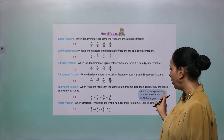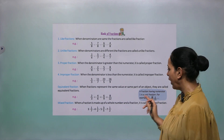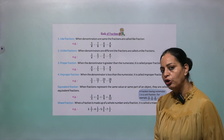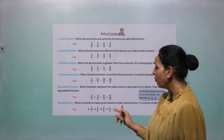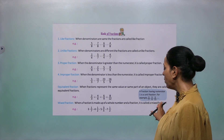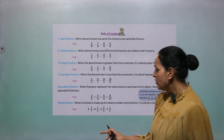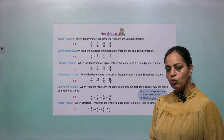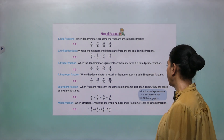A fraction having numerator 1 is called a unit fraction. When the numerator is 1, we call it a unit fraction. Next is mixed fraction — when a fraction is made up of a whole number and a fraction, it is called a mixed fraction. There will be one whole number and one fraction. Examples: 3 whole 1 by 7, 4 whole 1 by 2, 5 whole 3 by 5 — these are all mixed fractions.